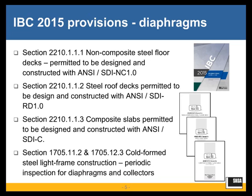In the International Building Code 2015, provisions for steel deck diaphragms are primarily covered in Chapter 22. There are three main sections — 2210.1.1.1, 2210.1.1.2, and 2210.1.1.3 — which address three different ANSI/SDI standards: one for non-composite steel floor decks, a second for steel roof decks, and a third for composite slabs.